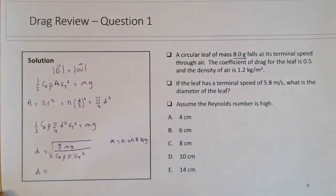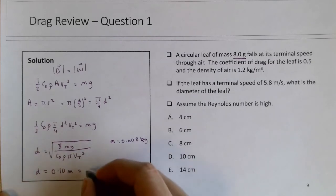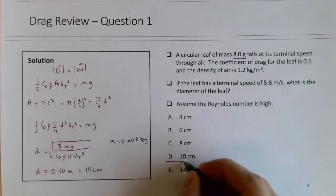If you put this into your calculator, you'll get 0.1 meters, which of course is 10 cm. So that's a pretty big leaf, but that's what the question states, so D is the correct answer.